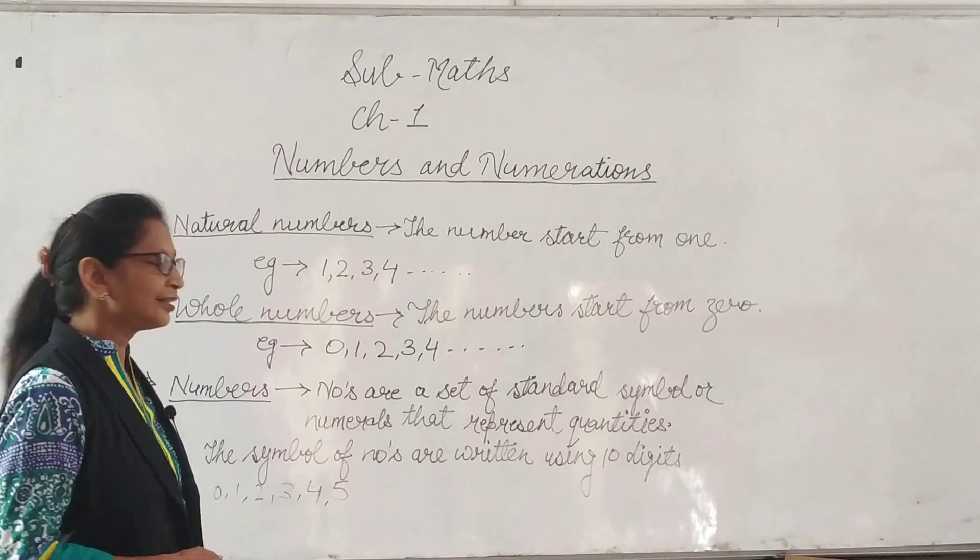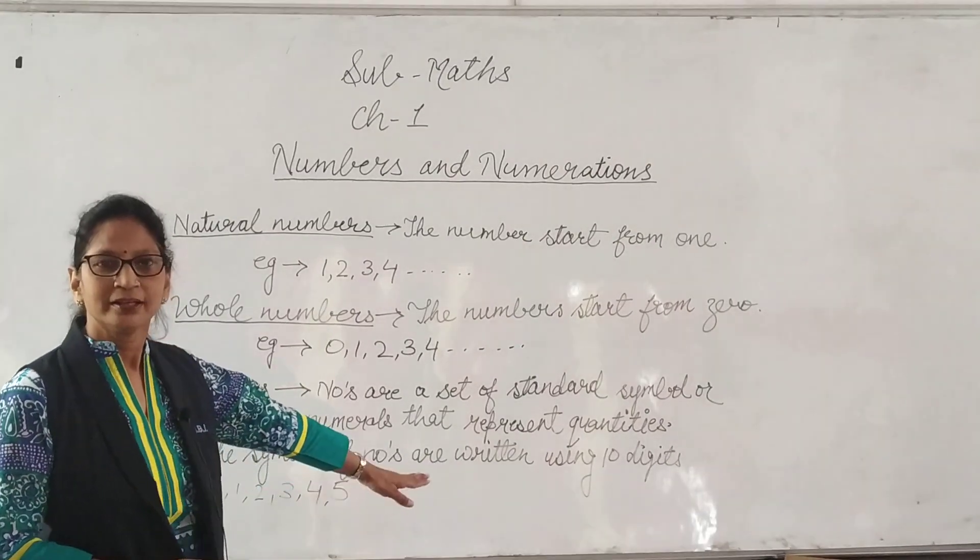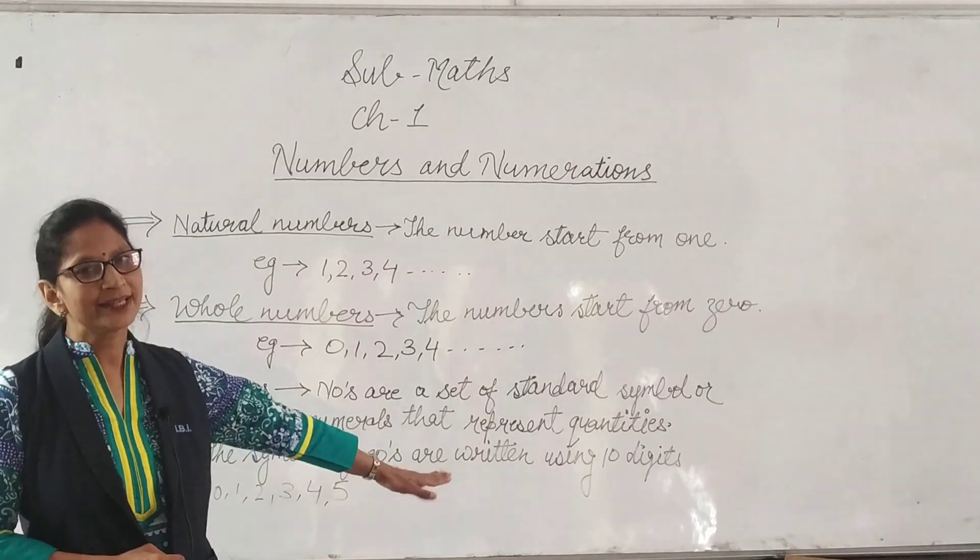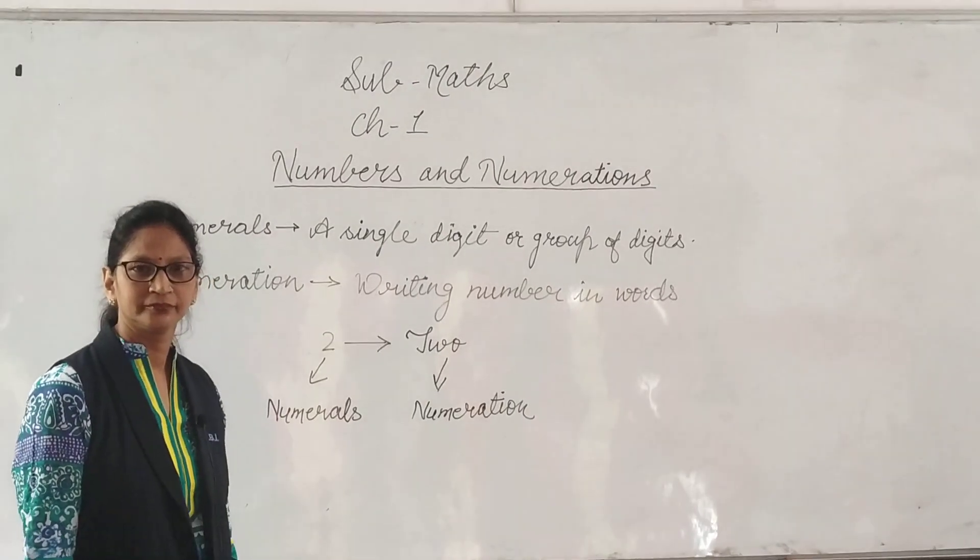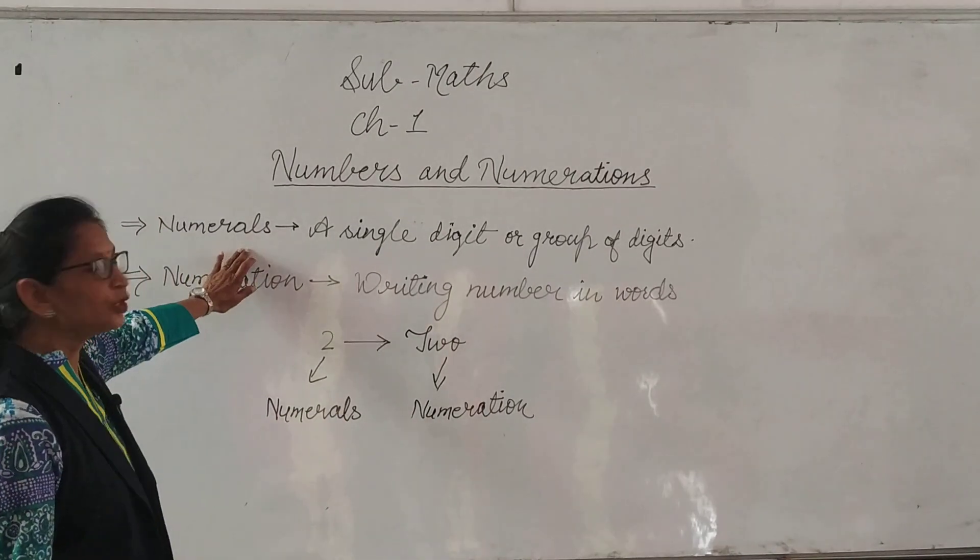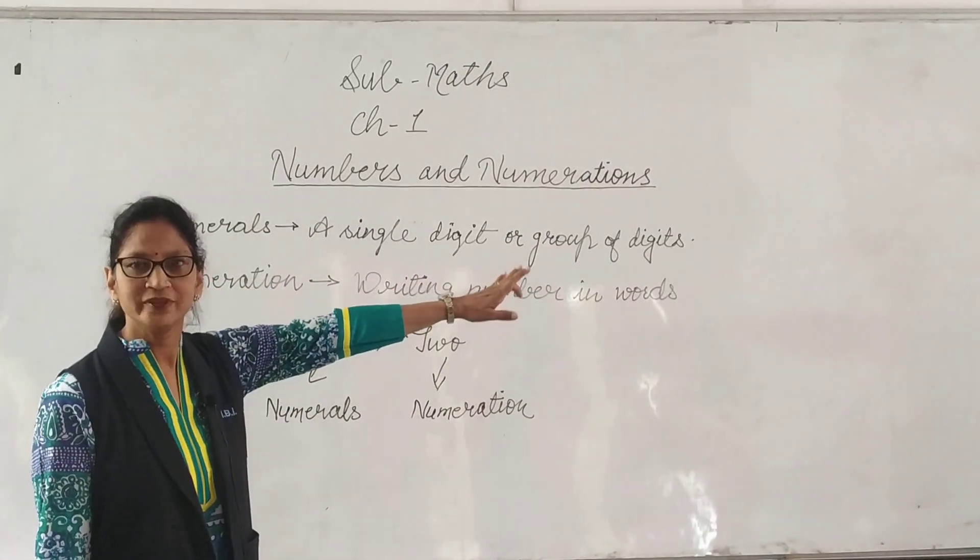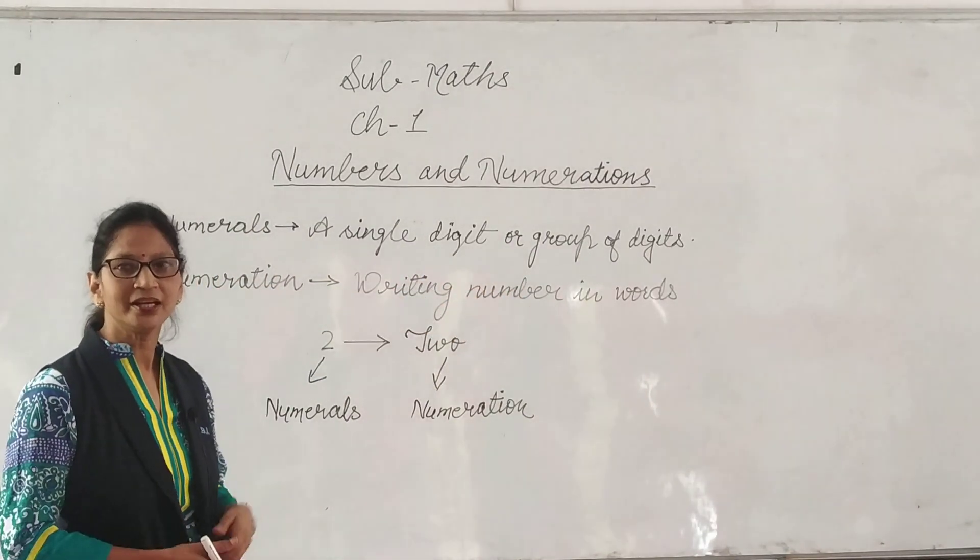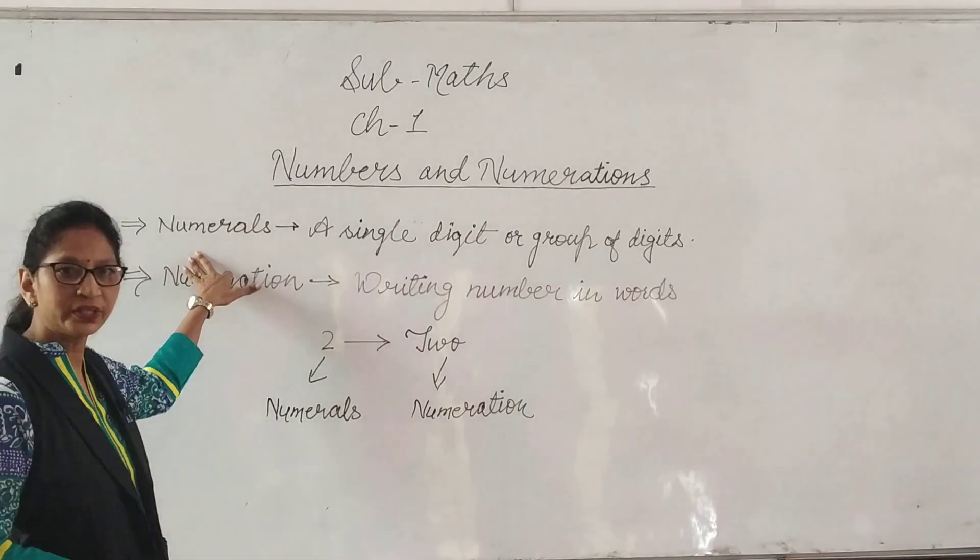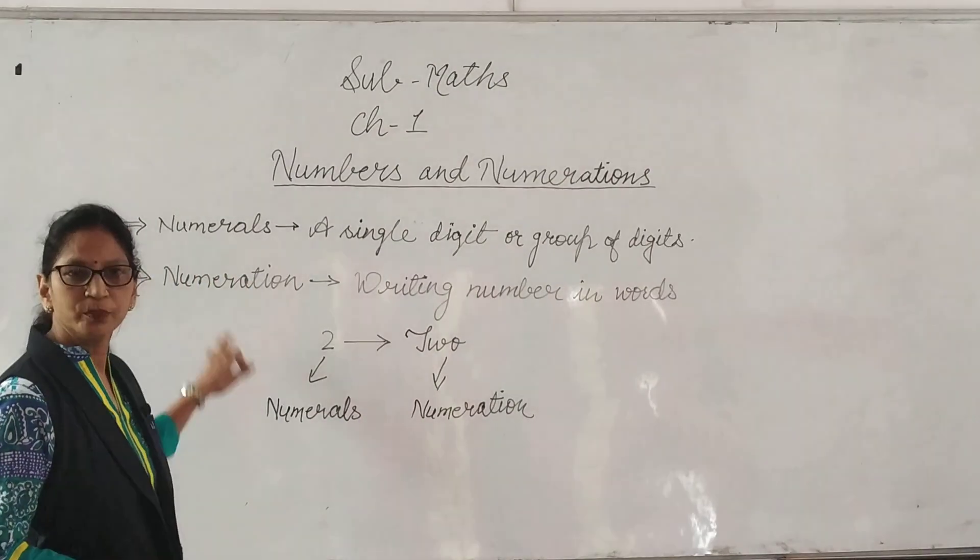These digits are called, these numbers are called digits. Next is numeral. A single digit or a group of digits representing a number is called numerals.